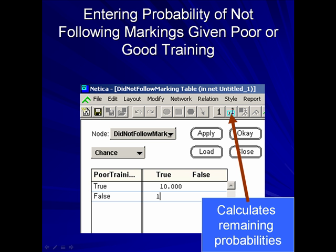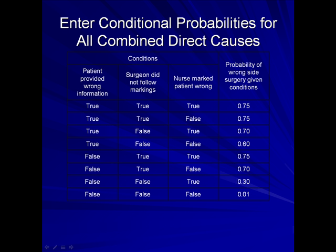When entering the probability of not following markings given poor or good training, click on the icon shown by the arrow. This table shows conditional probabilities for all combined direct causes. The first column shows whether or not the patient provided wrong information. The second column asks if the surgeon did not follow markings. The third column asks if the nurse marked the wrong patient. And the fourth column shows the probability of wrong side surgery given the conditions.